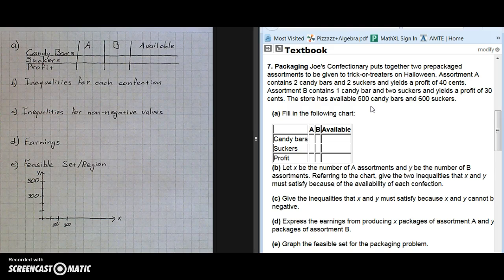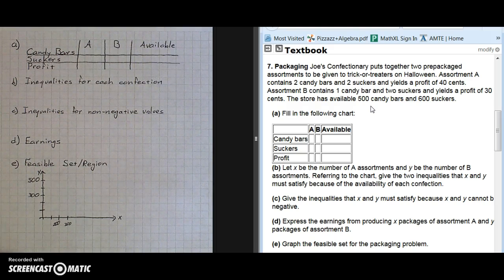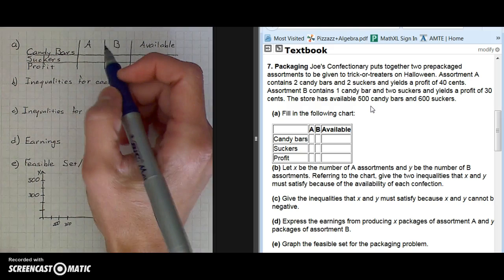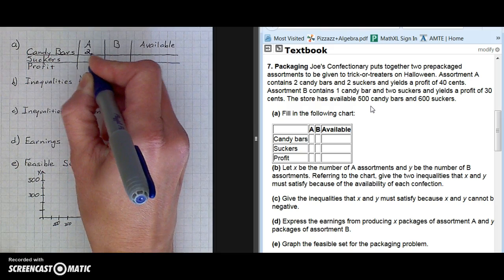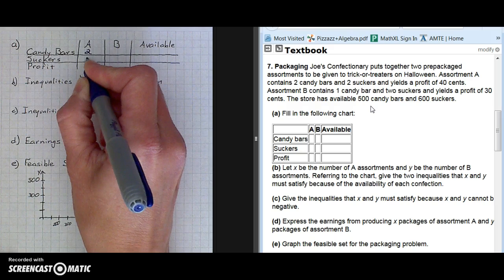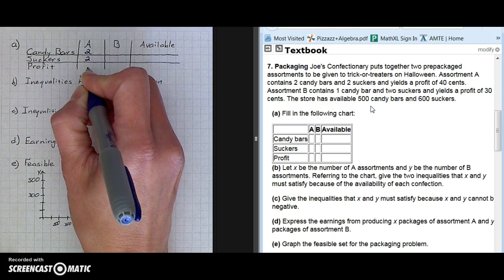Part A. Fill in the following chart. Confectionary A has two candy bars and two suckers. It yields a profit of 40 cents.